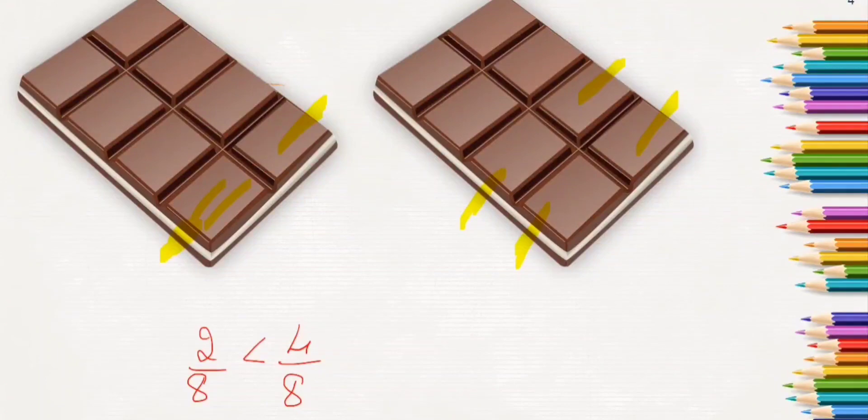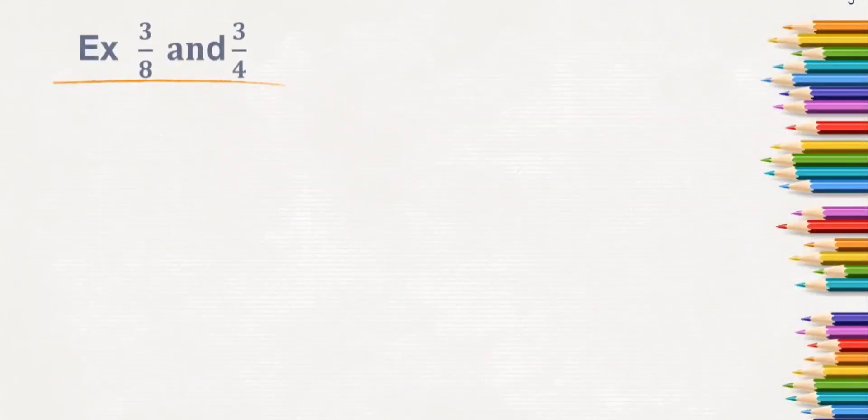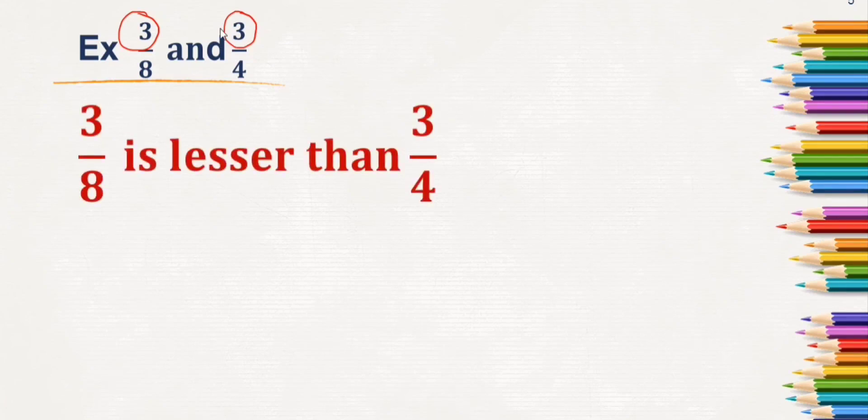When the denominators are the same, you can compare like this. What if the numerators are the same and denominators are different? Example: 3 by 8 and 3 by 4. How will you compare these fractions? I will say 3 by 8 is lesser than 3 by 4. Why? 8 is greater than 4, right? But why am I saying it's lesser?